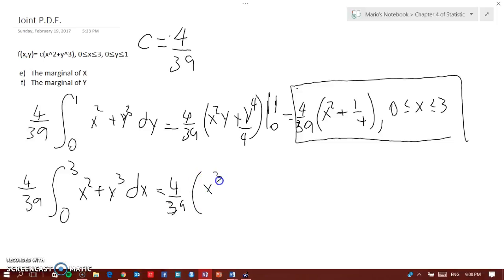And that would equal to 4 over 39 of x cubed over 3 plus xy cubed, from 0 to 3. This is what you would get. So now you would get 4 over 39—3 cubed is 27, 27 over 3 is 9—plus 3y cubed.